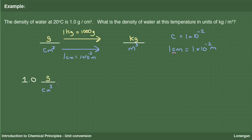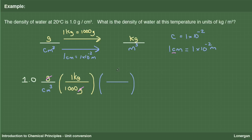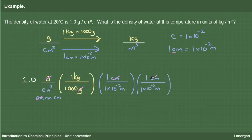Proceeding with the calculation: 1 gram per centimeter cubed. Multiplying by 1 kilogram per 1,000 grams results in the unit of grams cancelling and leaves us with the desired unit of kilogram. We then multiply by 1 centimeter per 1 times 10 to the minus 2 meters, recognizing that centimeter cubed is simply centimeter times centimeter times centimeter. Multiplying by this conversion factor once cancels one centimeter; multiplying again cancels one more; and multiplying a final time cancels the last centimeter, leaving meter times meter times meter, or meter cubed, in the denominator.